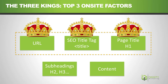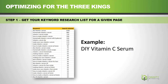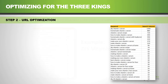Here's how to optimize for the three kings. First, get your keyword research list from Ahrefs. In this example I'm using a sample keyword — DIY vitamin C serum — and I've sorted through its keywords from most search volume to least. Now you want to start optimizing the URL.